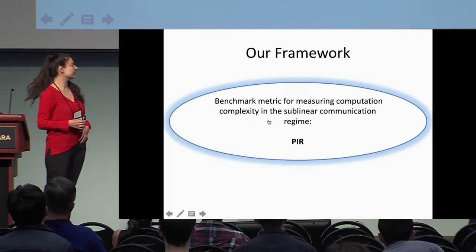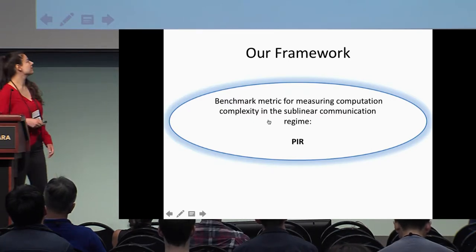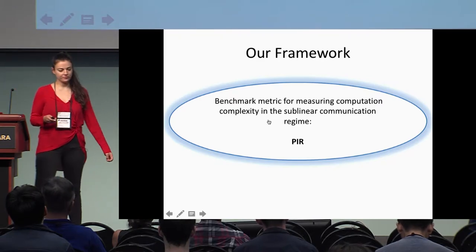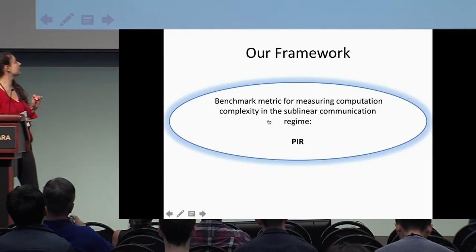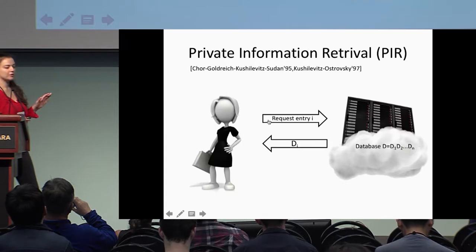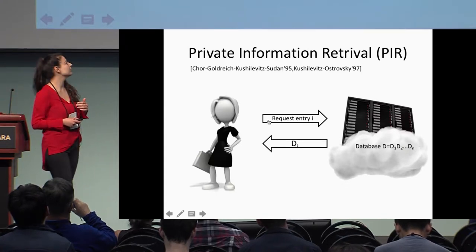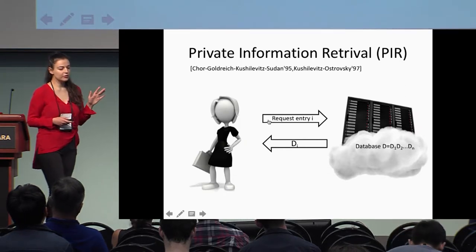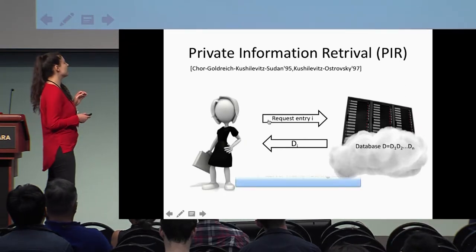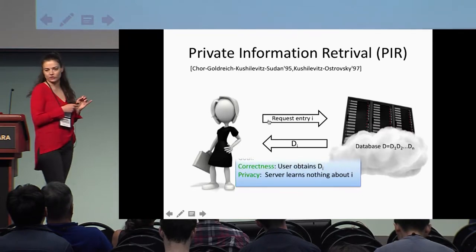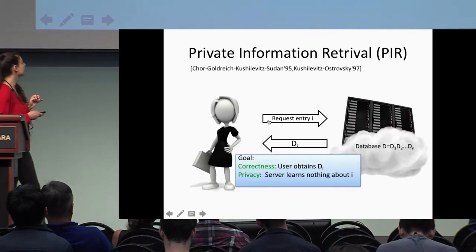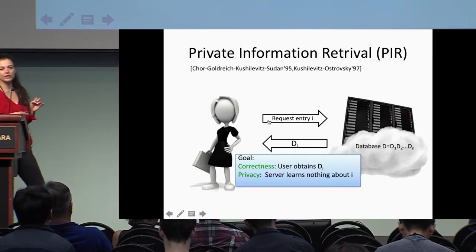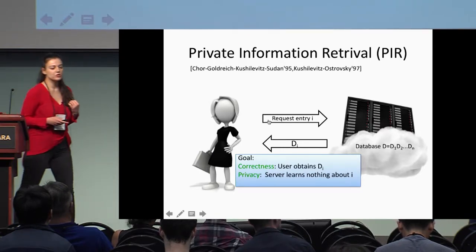To capture this hardness, the measure we're going to use is private information retrieval. The problem is simple: Alice wants to get some entry from a remote database. She sends a request and wants to receive back the entry at location i. The privacy requirement is that we don't want the server to learn anything about the index i.